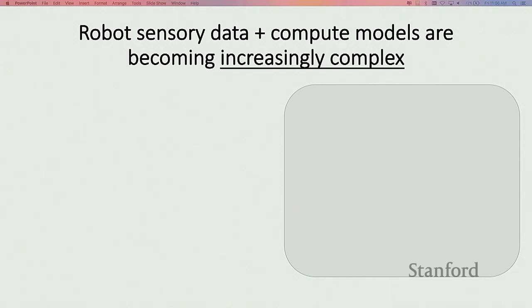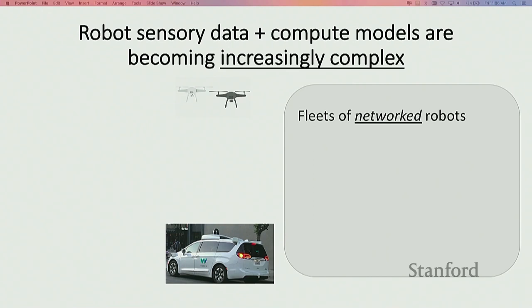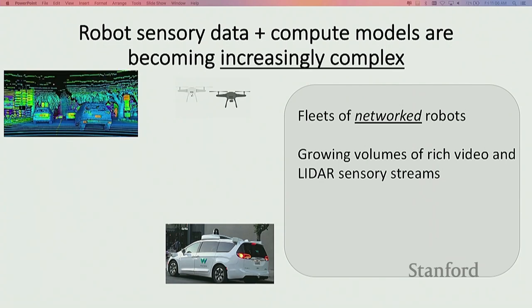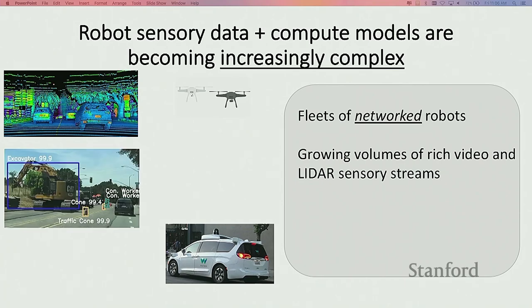We're starting to see fleets of networked robots ranging from low-power delivery drones all the way up to much larger self-driving vehicles. These networked robots are facing two coupled challenges. First, they're measuring growing volumes of very rich sensory data — for example, LiDAR point clouds used to localize different objects of interest during navigation, and coupled with LiDAR, autonomous vehicles also have several HD cameras for video streaming, object detection, and computer vision tasks.